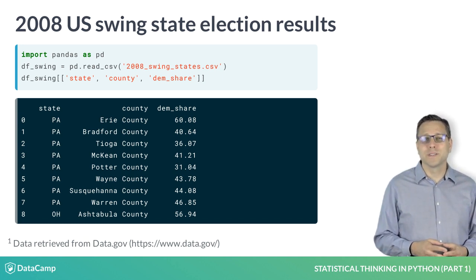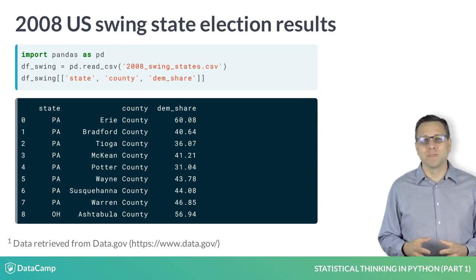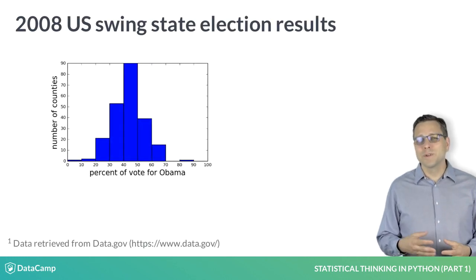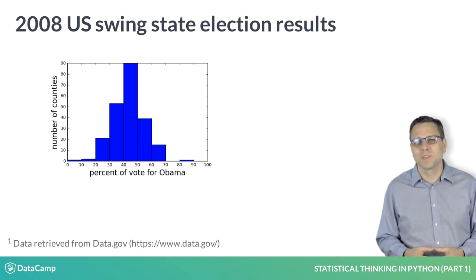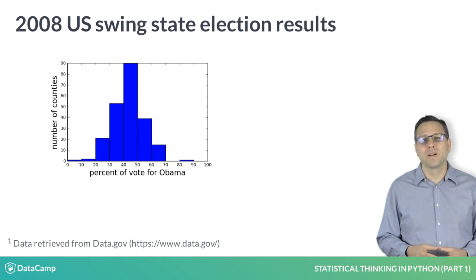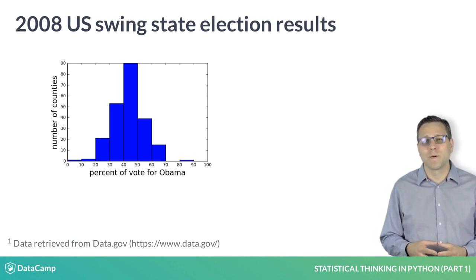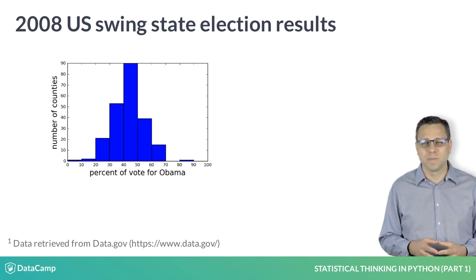In this chapter, we will discuss graphical exploratory data analysis. This involves taking data from tabular form, like we have here in the data frame, and representing it graphically. You are presenting the same information, but in a more human interpretable form. For example, we take the democratic share of the vote in the counties of all three swing states and plot them as a histogram. The height of each bar is the number of counties that had a given level of support for Barack Obama. For example, the tallest bar is the number of counties that had between 40% and 50% of its votes cast for Obama.